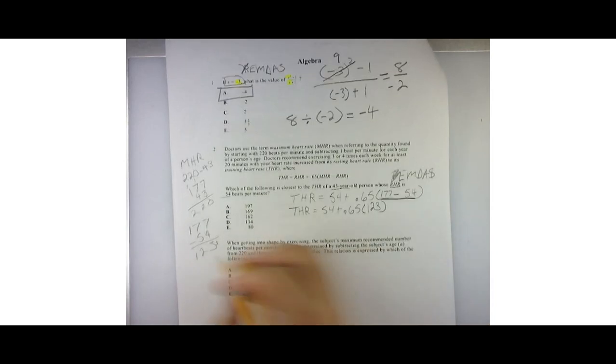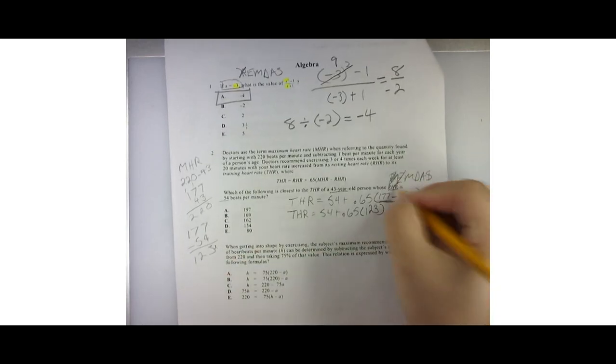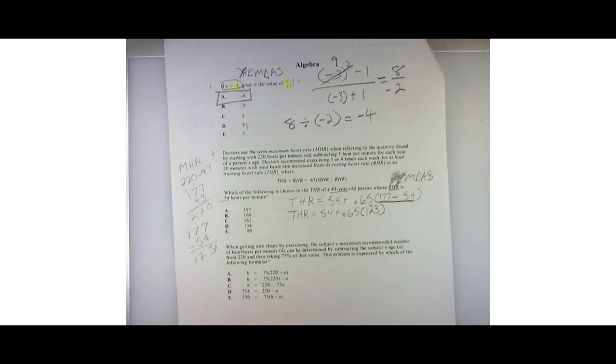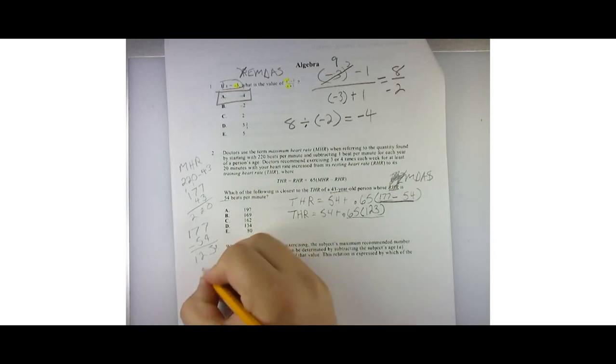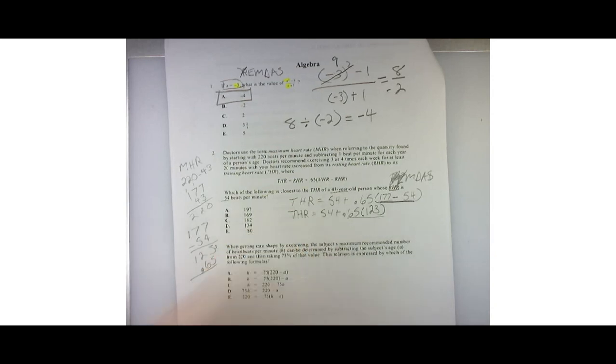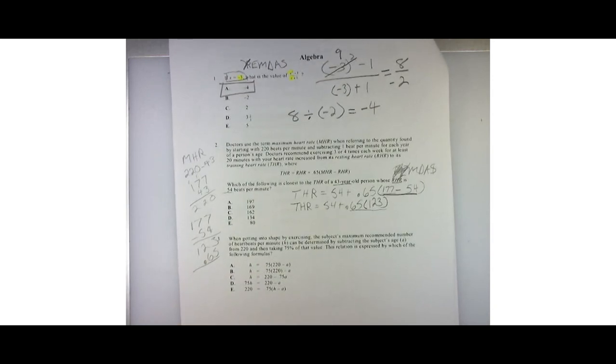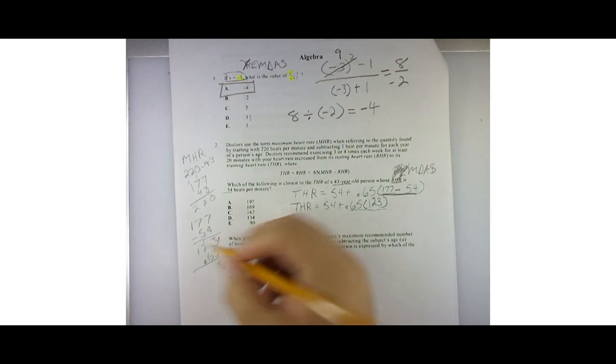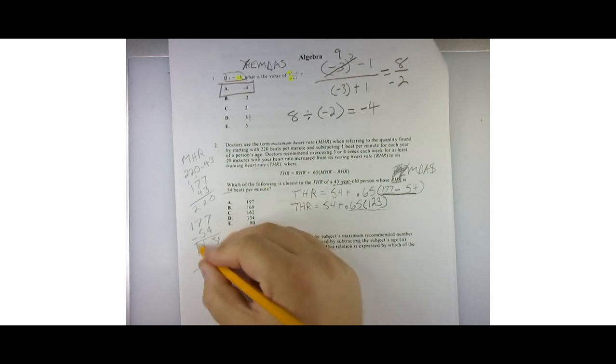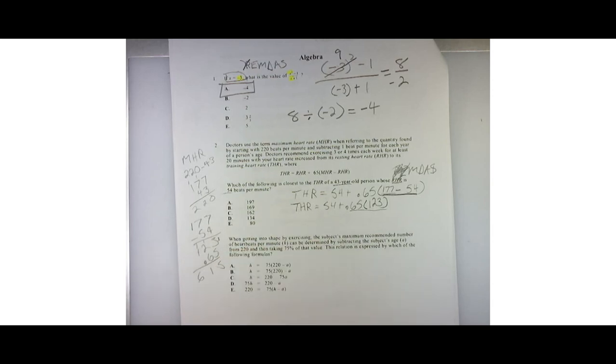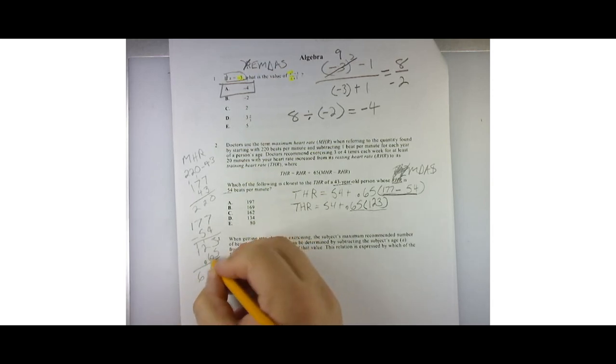Well, I've got to multiply that by 0.65 because there are no exponents. Next thing on the list is multiplication. This means to multiply 0.65 times 123. So 5 times 3 is 15, carry the 1. 5 times 2 is 10, plus 1 is 11, carry the 1. 5 times 1 is 5, plus 1 is 6. Because 6 is in the 10th spot, I'm going to put a 0 here as a placeholder. 6 times 3 is 18, carry the 1.